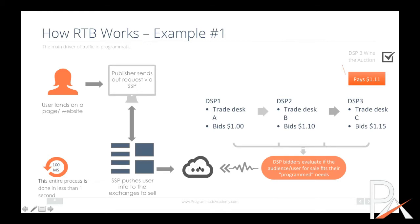Where it is then available for purchase. On this side, we have the DSP — the DSP is where the buying occurs. The DSP bidders evaluate, through technology, the audience that has just been made available. Does it fit the profile I'm looking for for my campaign? If yes, then they bid, and then they either win or don't win. When you see a report on the DSP side called win rate, this is where it happens — the percentage of wins you get out in the exchanges for the bidding.